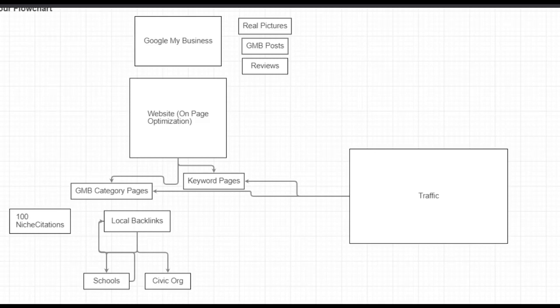All right, so look — like I said, this is an overview for anybody who's interested in getting their business or their client's business in the Google 3-pack. Like, what do I need to research to get my client in the Google 3-pack? Forget about how to do it — what are the steps, what are the things I even need to research? I'm going to show you the five or six things that you need to do to rank in the Google 3-pack.